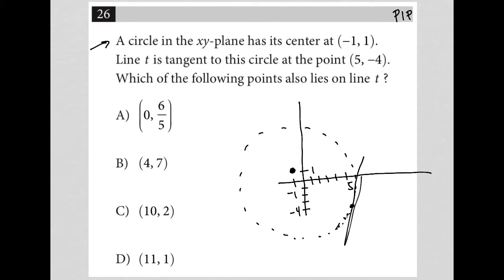Which of the following points also lies on line T? I think the visual is probably good enough to tell, to be honest. Oh, I know what they want me to do — this is a radius here. The point at which a radius intersects a tangent is always going to be 90 degrees. Whenever two lines intersect at a 90 degree angle, those lines are perpendicular.